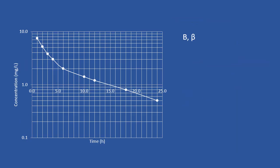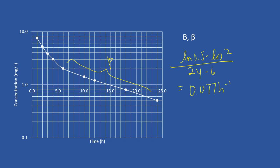This is the graph you should get. The first parameter you can calculate is beta, also known as ke. I'm going to use the value ln(0.5) minus ln(2) divided by the time point 24 minus 6. The answer should be 0.077, so this is beta. The second parameter is found by extrapolating a straight line to the y-axis; you should get B. The value for B is 3.1.